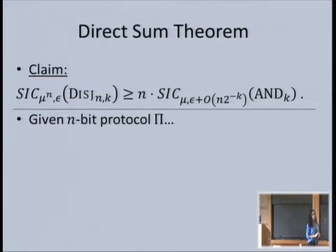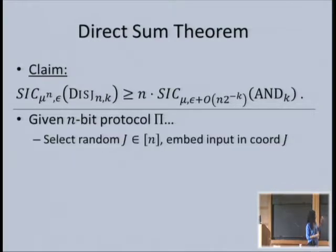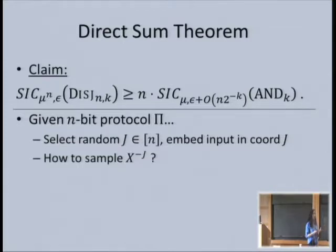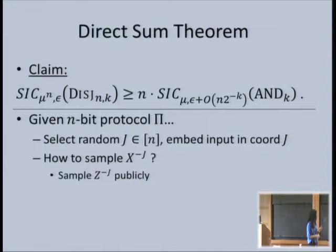Let me show you why the error grows. I assume I have an n-bit protocol π solving the n-bit problem. I want to construct a one-bit protocol: I'm given a one-bit input, I choose a random coordinate and put my input there. The question is how to sample the other coordinates to come up with an n-bit input. One thing we can afford to do is sample the special players Z publicly—the coordinator samples this and sends it to everyone. That's okay because we're conditioning on Z throughout.